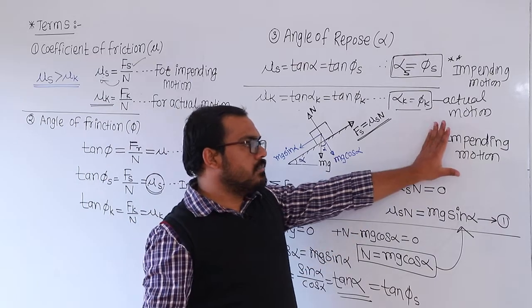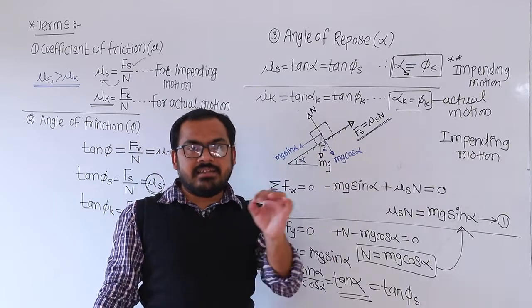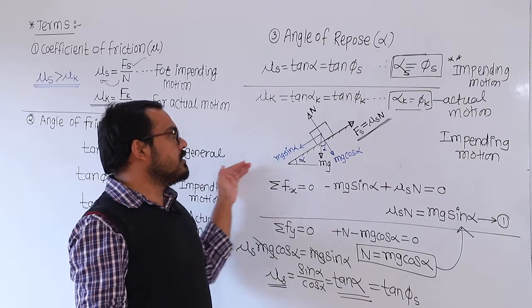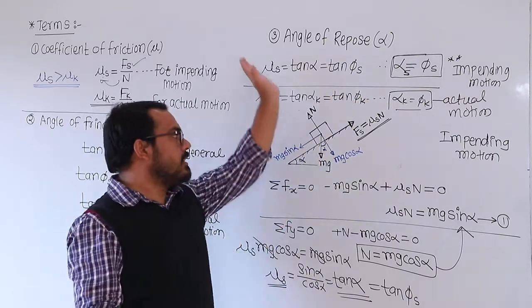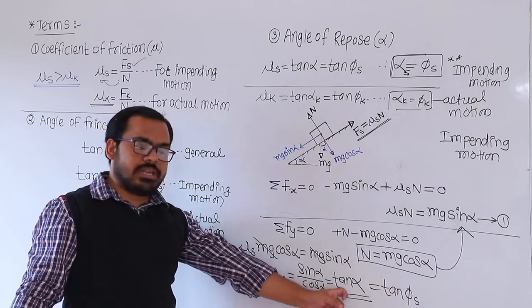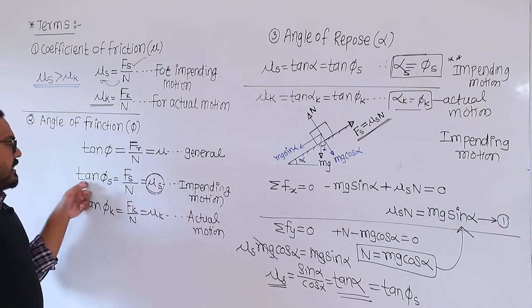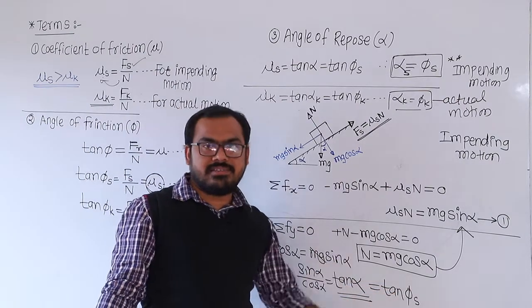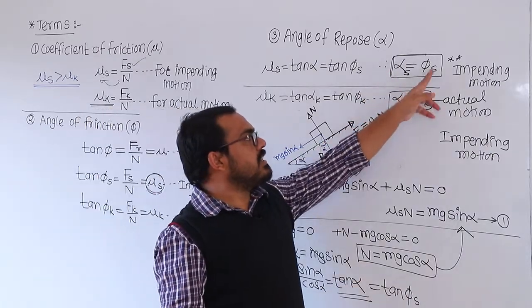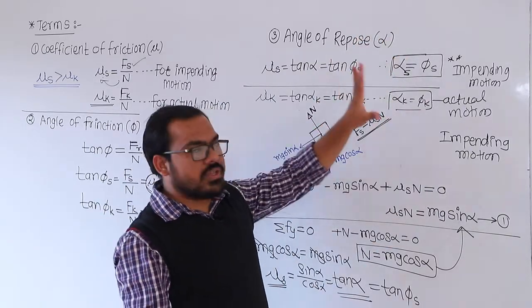If there is impending motion, the body is in equilibrium — that is the limiting equilibrium. That is why all forces along the plane sum to zero and all forces perpendicular to the plane sum to zero. So mu_s equals tan alpha, and since mu_s equals tan phi_s, we get alpha_s equals phi_s for impending motion and alpha_k equals phi_k for actual motion.